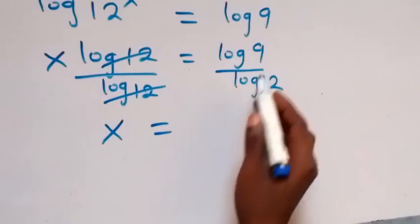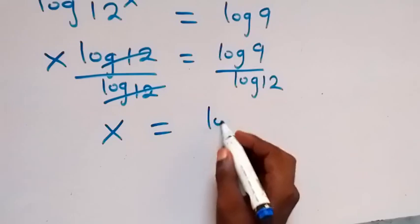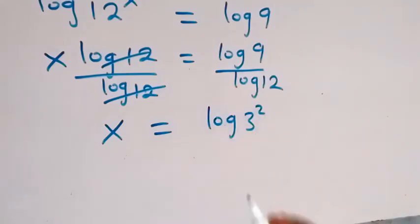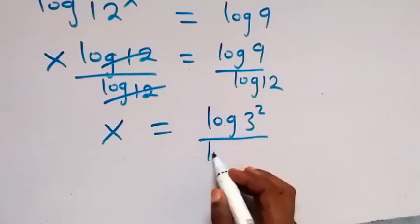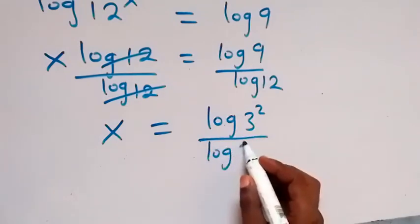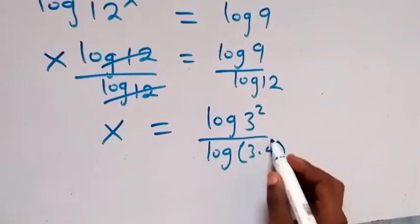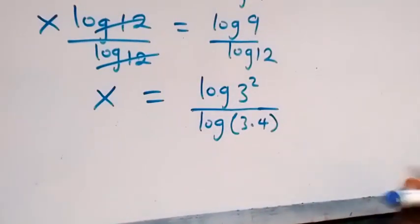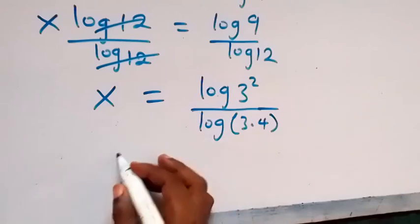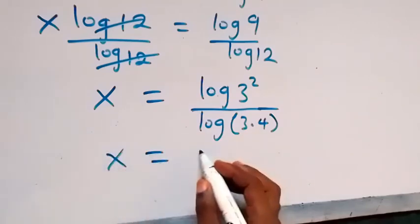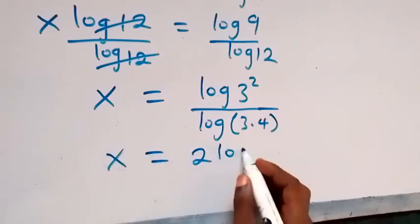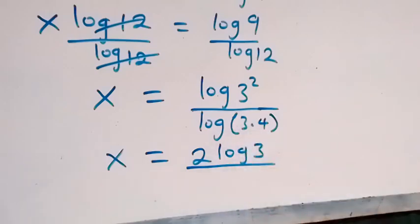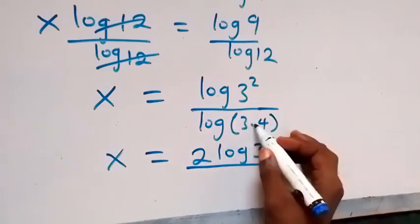We can simplify by writing 9 as 3 squared, and 12 as 3 times 4. So x equals log 3 squared over log of 3 times 4. Applying the power law, 2 comes to the front, giving x equals 2 log 3 over log of 3 times 4.